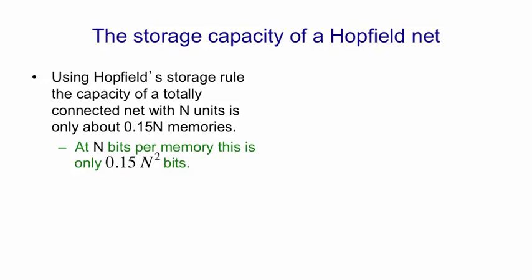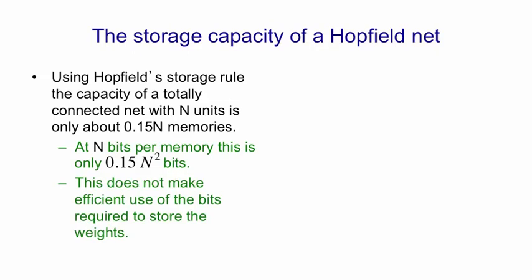Each memory is a random configuration of the n units, so it has n bits of information in it. And so the total information being stored in a Hopfield net is about 0.15n² bits. This doesn't make efficient use of the bits that are required to store the weights. In other words, if you look at how many bits the computer is using to store the weights, it's using well over 0.15n² bits to store the weights. And therefore, this kind of distributed memory in local energy minima is not making efficient use of the bits in the computer.